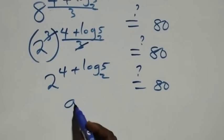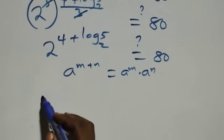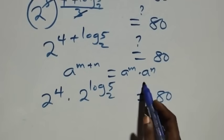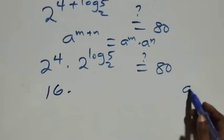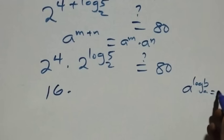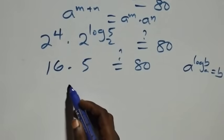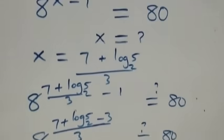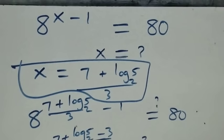From the law of indices, a raised to power m plus n is the same as a raised to power m times a raised to power n. So 2 raised to power 4 times 2 raised to power log base 2 of 5 equals 80. Now 2 raised to power 4 is 16, and by the identity a raised to power log base a of b equals b, we have 2 raised to power log base 2 of 5 equals 5. So 16 times 5 gives us 80, which equals 80 on the right-hand side. We conclude that x equals to 7 plus log base 2 of 5, all over 3, satisfies this given problem.